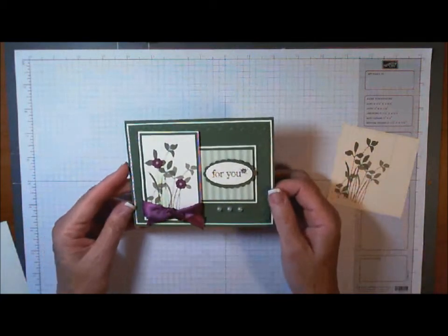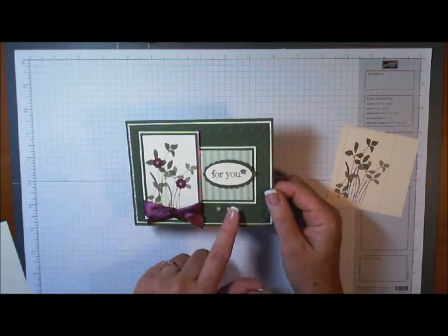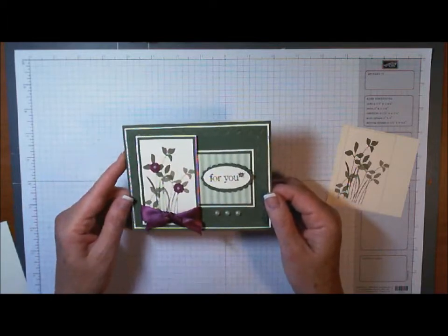It has just one sheet of Very Vanilla cardstock, one sheet of Always Artichoke, a few embellishments, a small piece of ribbon, and our graphic is done with My Digital Studio.